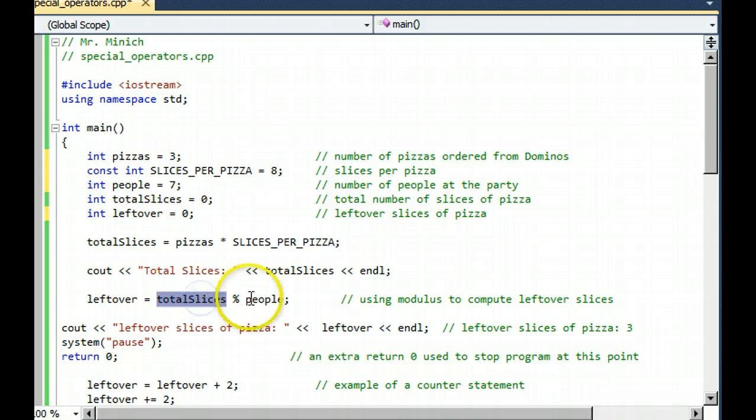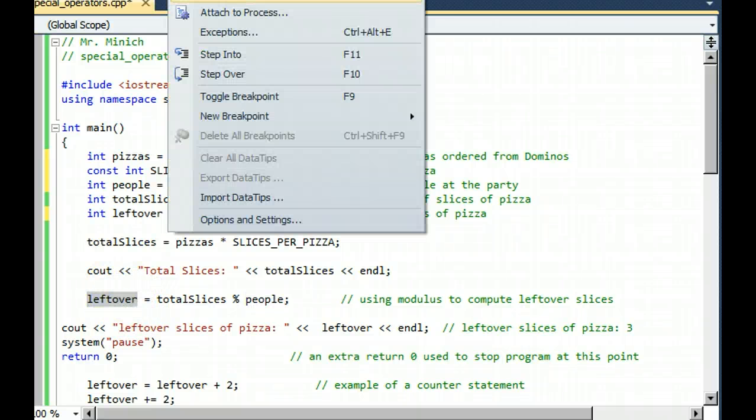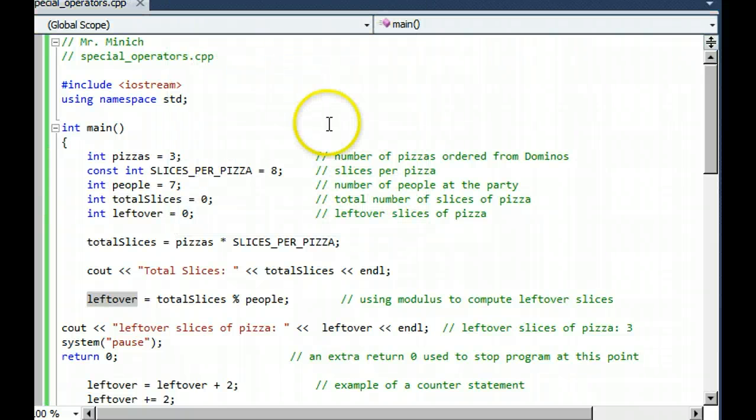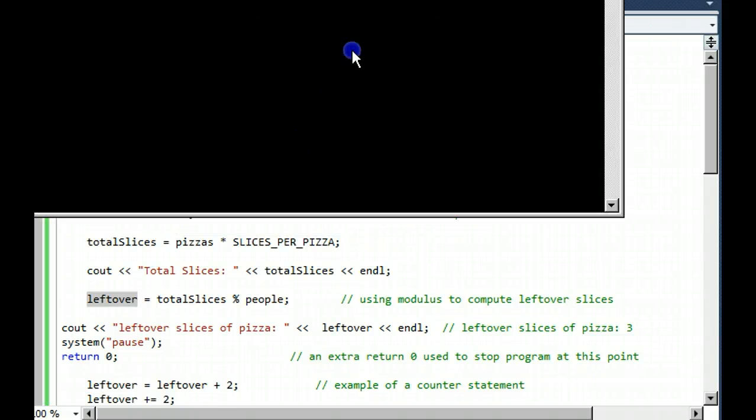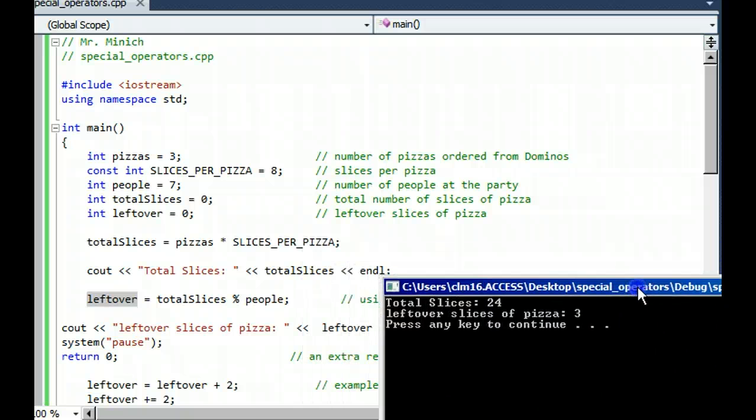So in this case, 24 divided by 7 leaves a remainder of 3 if you use long division like we did on the chalkboard earlier in this class. And therefore, the number 3 is stored in leftover. Let's all execute the program. Debug, start without debugging. And we get the answer here.